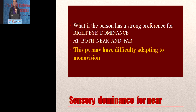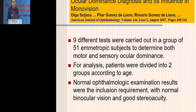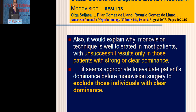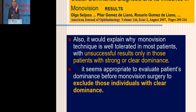A study tested nine different dominance tests in 51 emmetropic subjects and found no clear ocular dominance in any patient — no correlation between the tests. So should we still test? Yes. If somebody is definitely dominant in one eye, he is a poor candidate for monovision. If you can't determine left from right dominance, he's a good candidate able to adapt to anything.